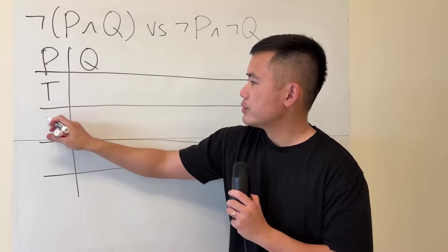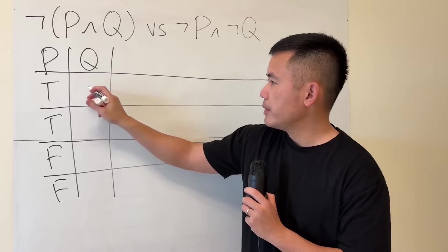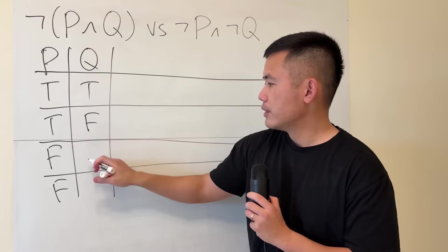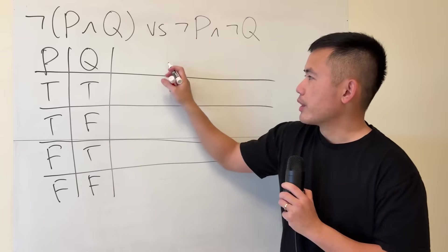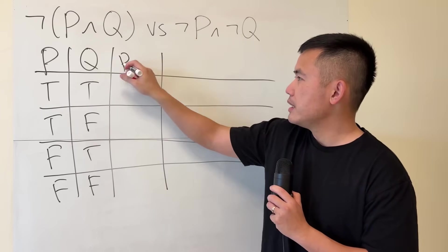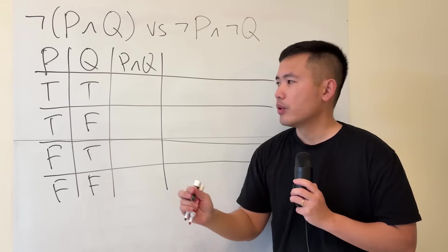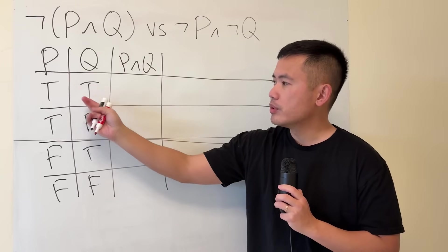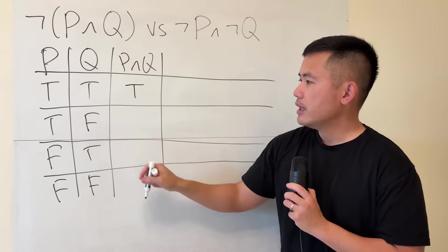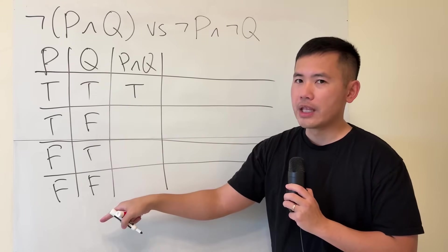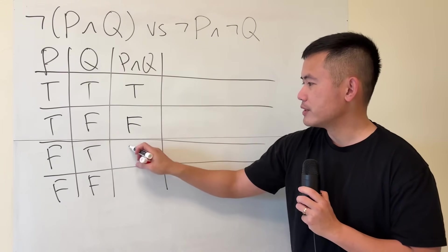For P, we have true, true, false, false. And for Q, it can be true, false, true, false. Now let's work out P and Q. This is an AND statement, so both must be true in order to be true. So true and true is true. If one of them is false, or both of them are false, the result will be false. So the rest will just be all false.